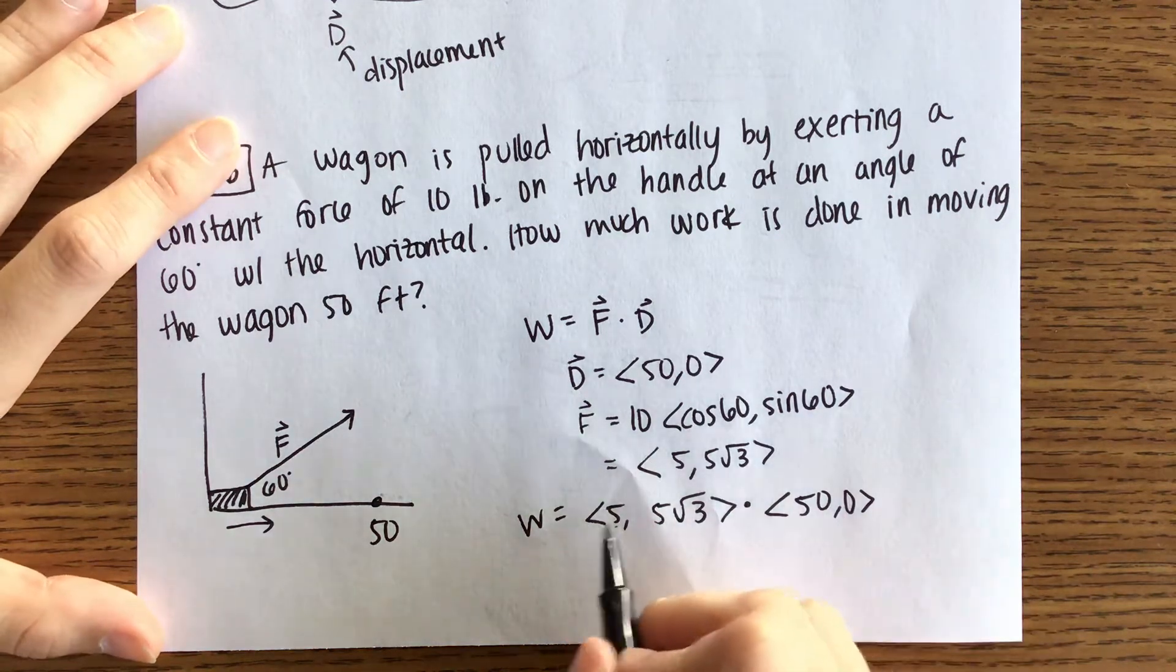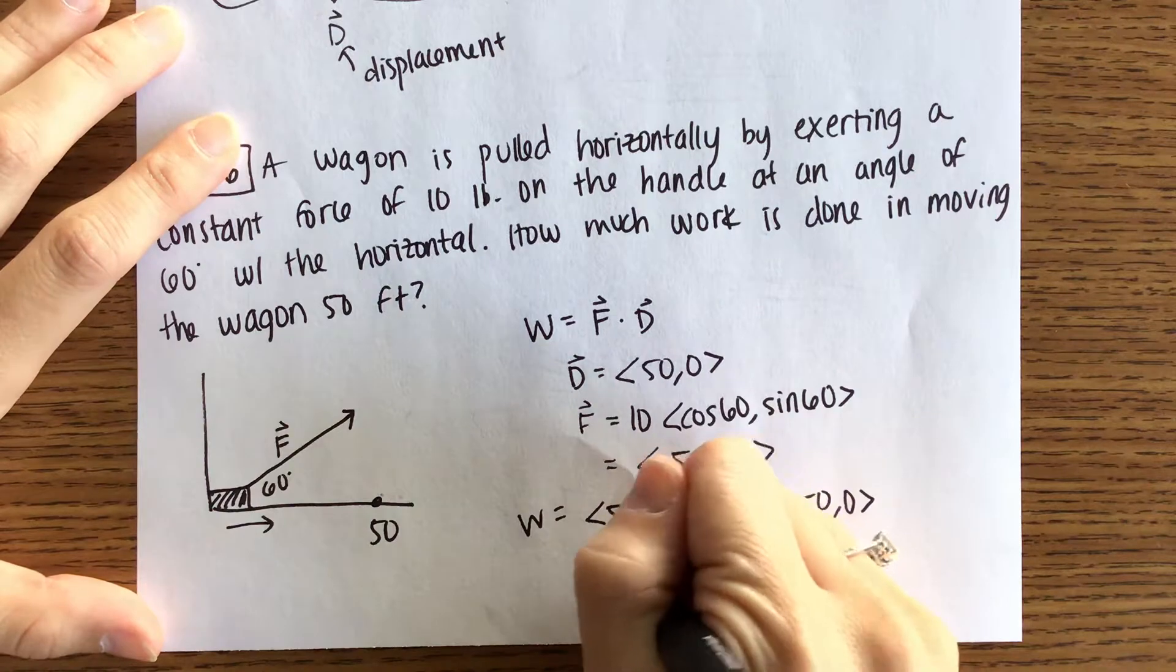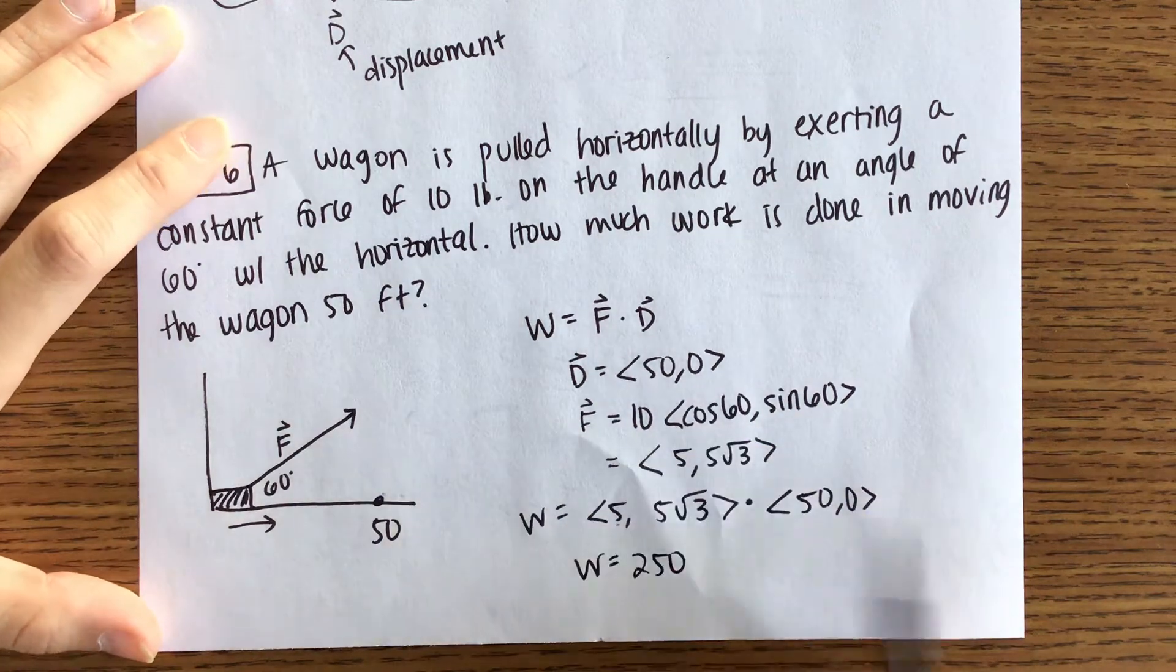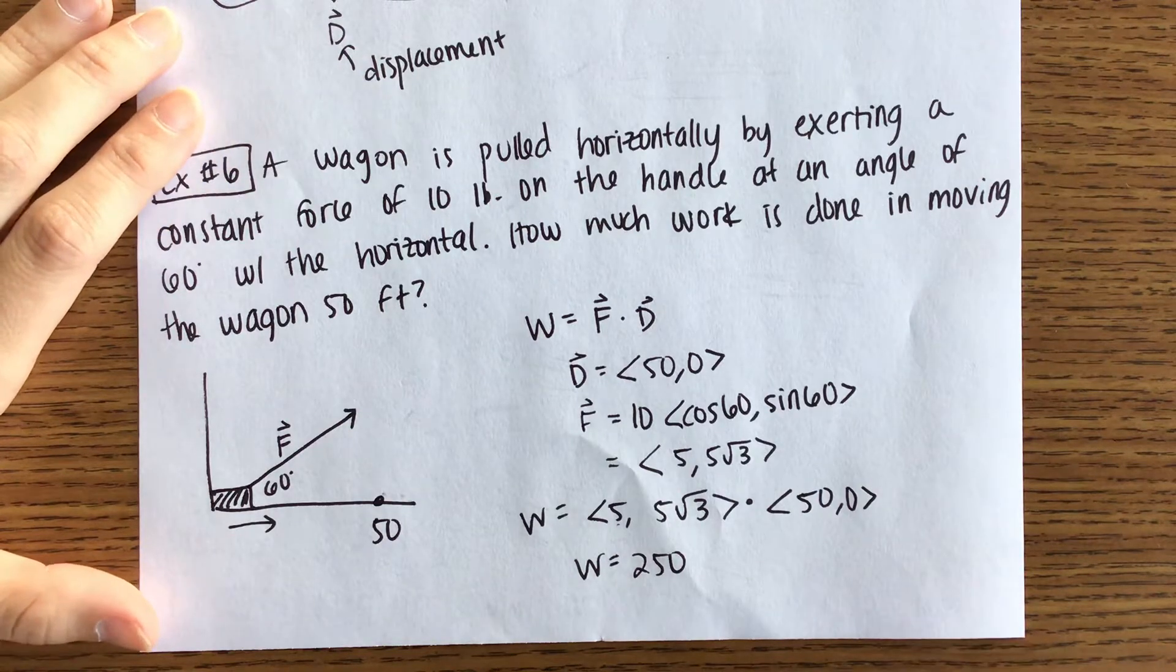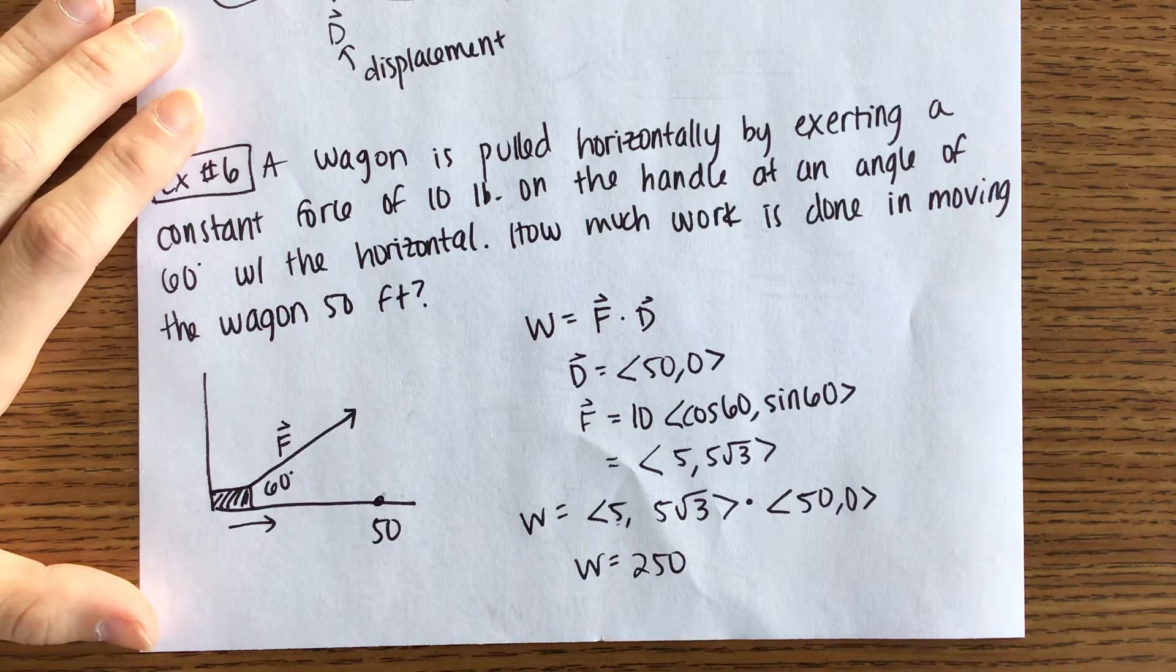So ultimately we're going to end up with 5 times 50, which is 250. Plus 0. So I'm not going to write that. So that is our work. What's the units on that? Foot pounds.